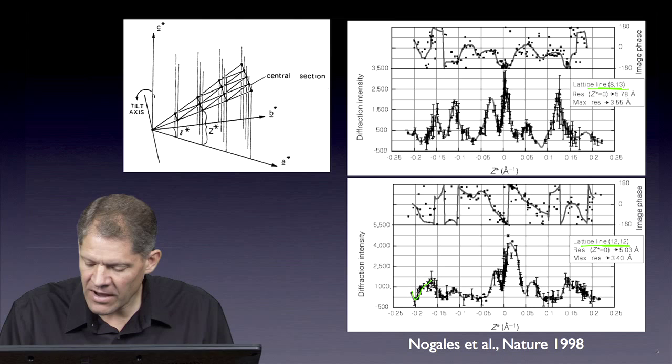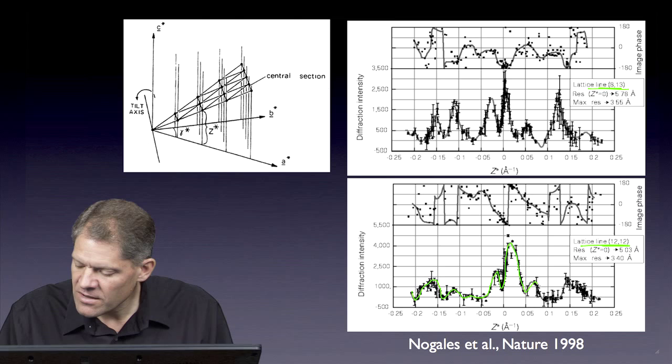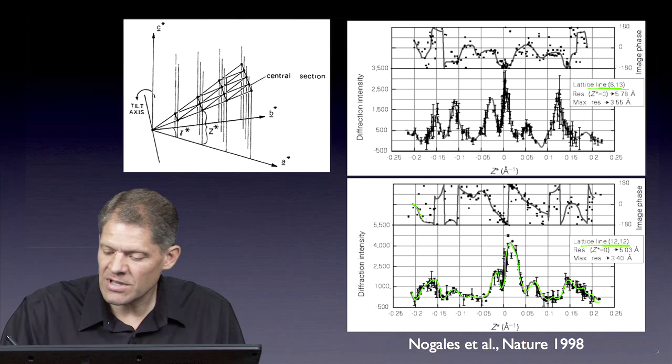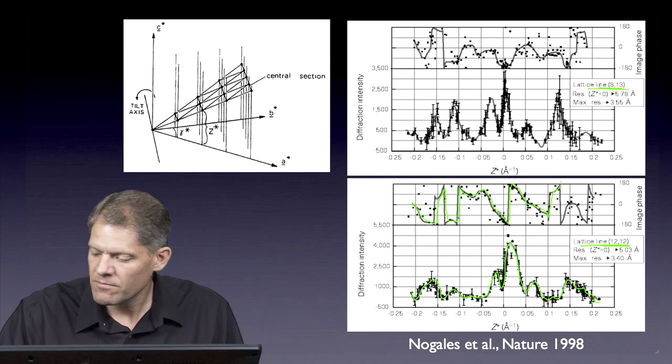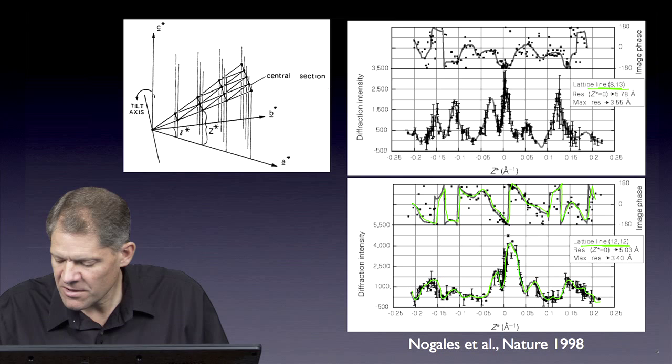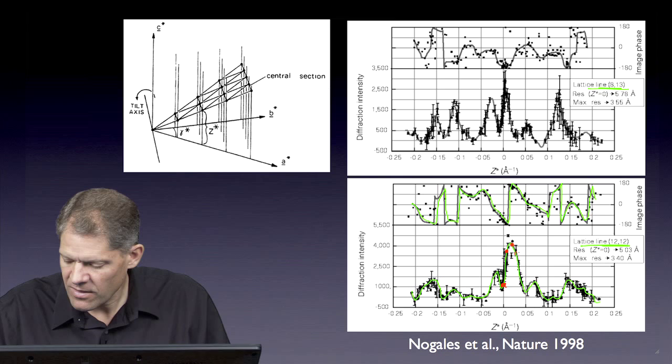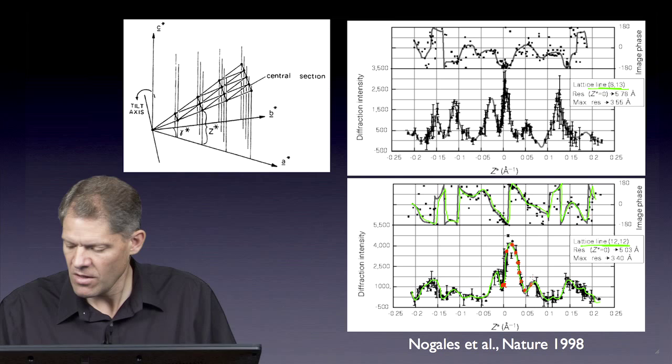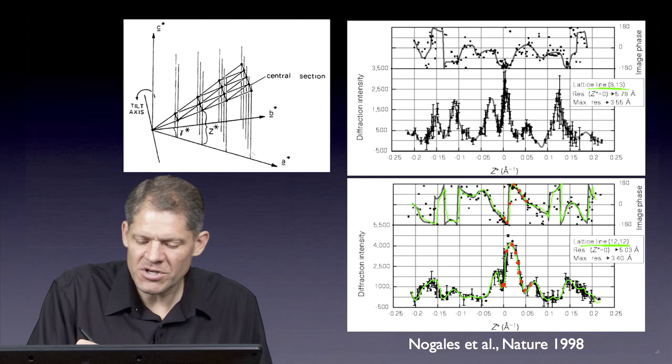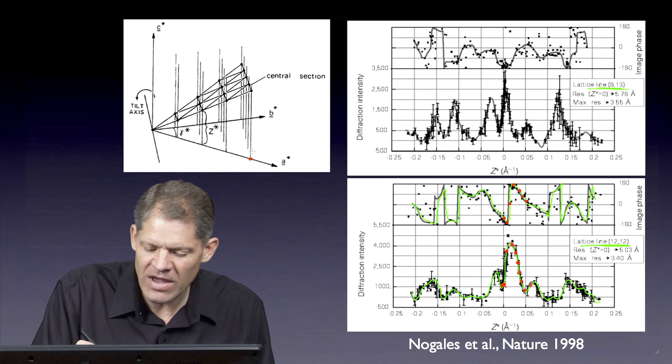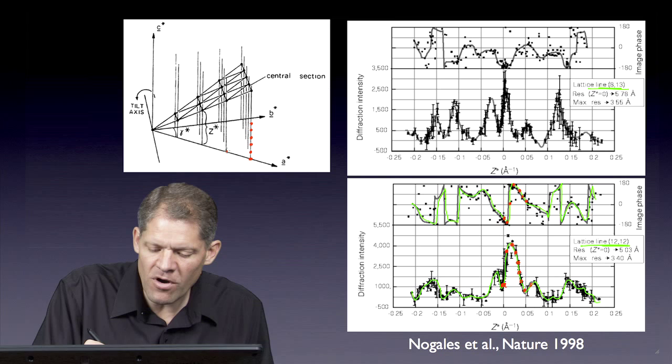Once all the data is plotted here, then a curve is found that connects these. It's curve fit. Both the amplitudes and the phases are curve fit. Then they can be sampled at regular intervals along these lattice lines, which means we're going to sample the amplitudes and phases on a regular lattice in z. And we do this for all the lattice lines.